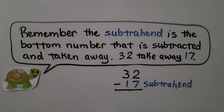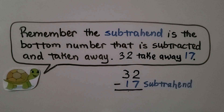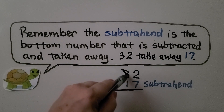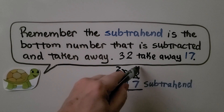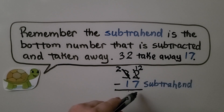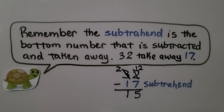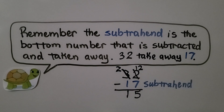Remember, the subtrahend is the bottom number that is subtracted and taken away. For 32 take away 17, the subtrahend is 17 — that's the amount we're taking away from 32. We start by looking at the ones place. We only have 2 ones and we're trying to take away 7 ones, so we don't have enough. The 3 tens becomes 2 tens. We give 10 ones to the ones place, so instead of 2 ones we now have 12 ones. 12 minus 7 is 5 ones. 2 tens minus 1 ten is 1 ten. It's equal to 15. Remember, the subtrahend is what we're taking away from the minuend.